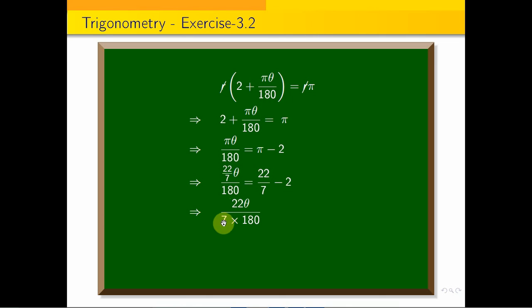So 22θ/(7×180) equals (22 - 14)/7, which is 8/7. Therefore, θ = (8/7) × (7×180/22).